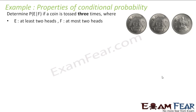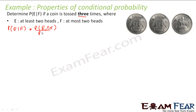We have to find the probability of E given F, where E is 'at least two heads' and F is 'at most two heads' in a toss of three coins. Let's solve this using the formula: probability of E given F is probability of E intersection F divided by probability of F. For this, we have to find events E and F first.